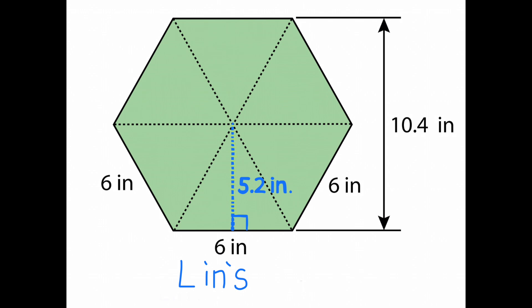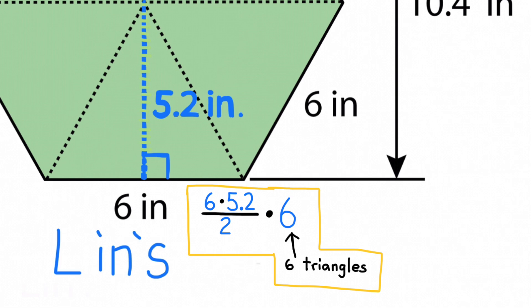The dimensions show that the height of the hexagon is 10.4 inches. So the height of the triangles would be half of that. Each of the six triangles have a height of 5.2 inches. To find the area of these triangles, we need to multiply half of the base times the height, or base times height divided by 2.